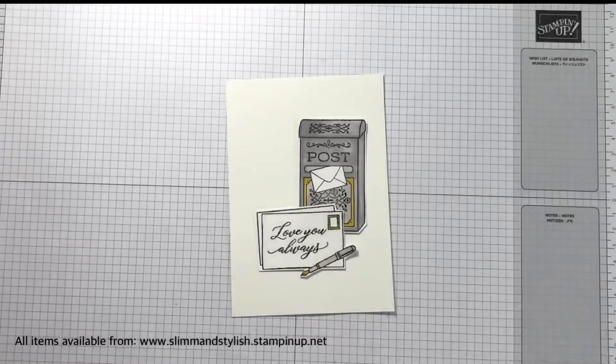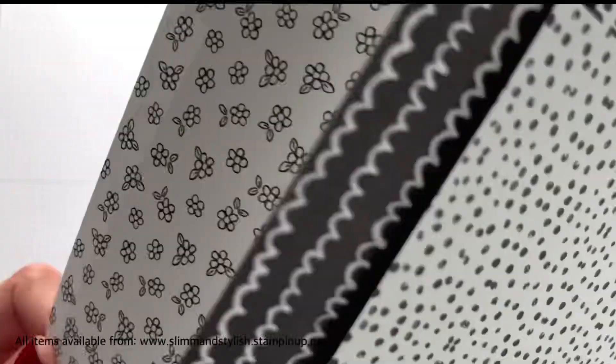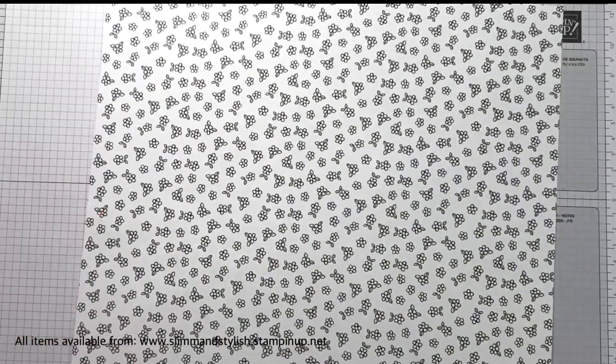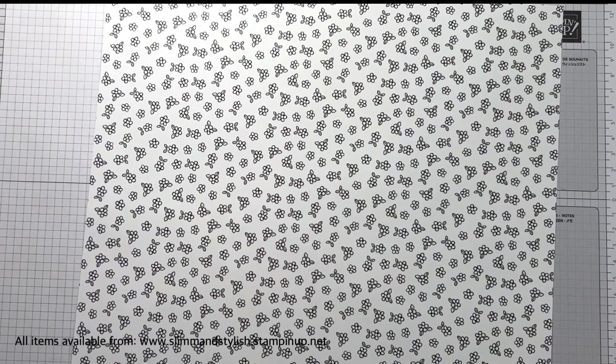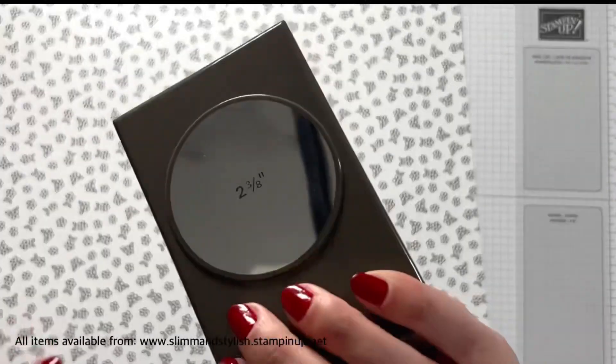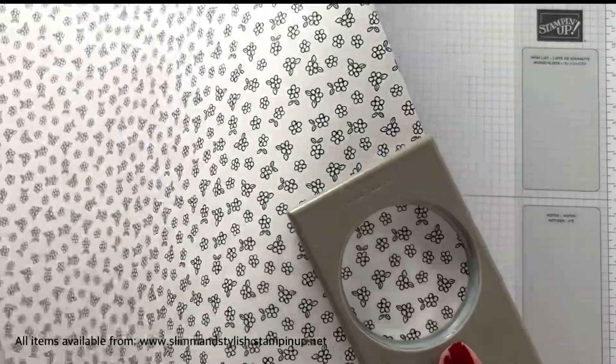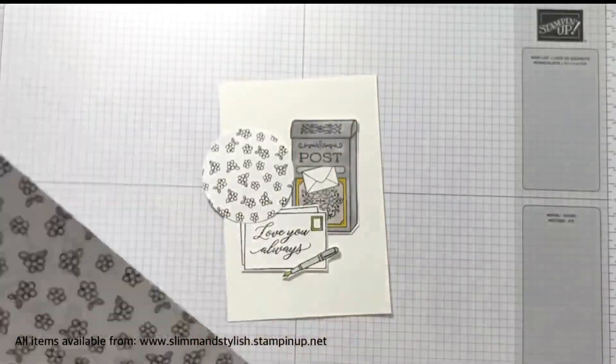So I went and got the Zany Zoo DSP. So I love this. It's got the pattern on the front. It's got these black and white images on the back and I decided to use my circle punch and cut out this one with the flowers. I just thought it was nice and the fact that the card's a monochrome card, it worked quite well.